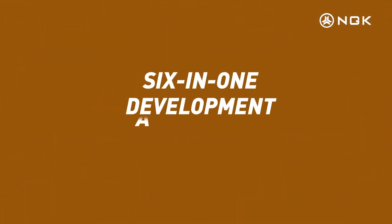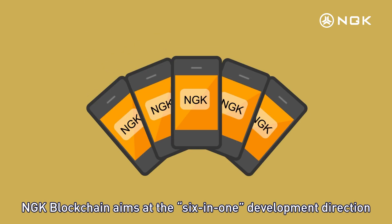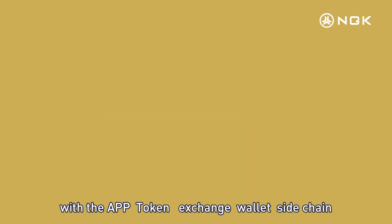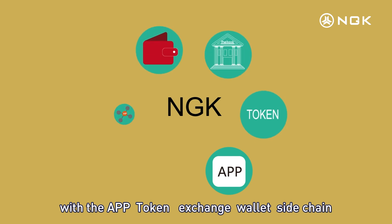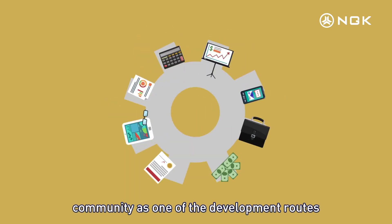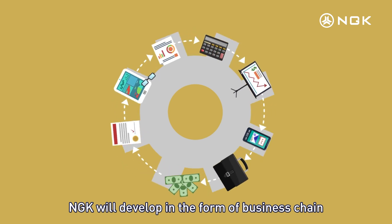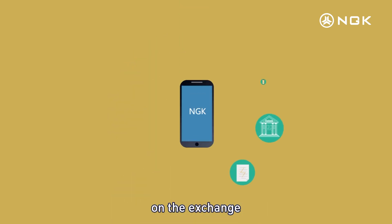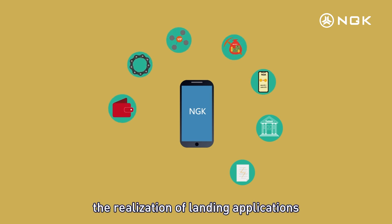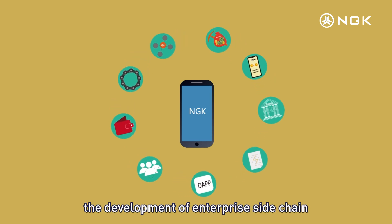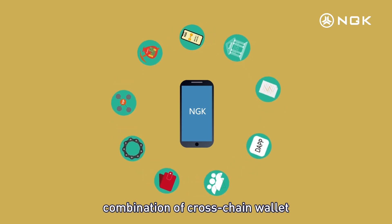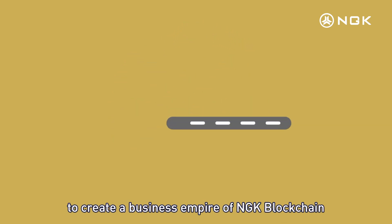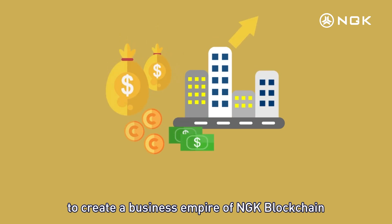6-in-1 Development Advantage. NGK blockchain aims at the 6-in-1 development direction, with the app, token, exchange, wallet, sidechain, and community as one of the development routes. NGK will develop in the form of a business chain, including technology open source, listing on exchanges, realizing landing applications, developing enterprise sidechain, combining cross-chain wallet, creating a supercommunity, building dApps, and more, to create a business empire of NGK blockchain.